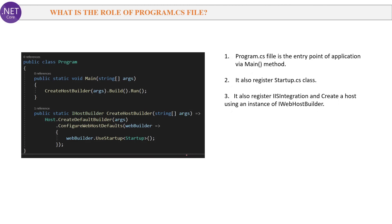Next question: What is the role of program.cs in .NET Core? program.cs is the entry point of the application via the main method. Whenever any request comes from a client, the main method is the first point of contact. This main method builds the host server like Kestrel and IIS with the help of the build method. Then the run method sends the request to the startup class, which we are calling with the help of the createHostBuilder method and a lambda expression.